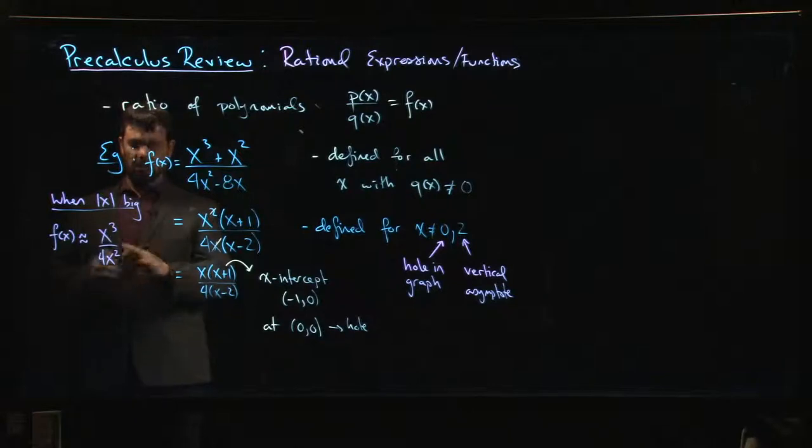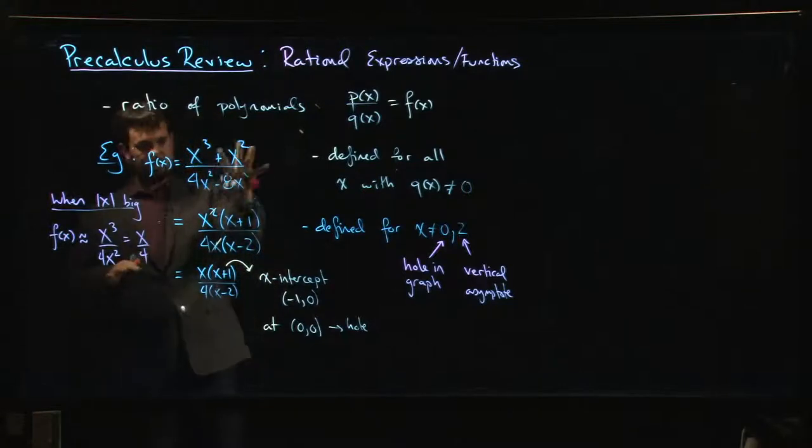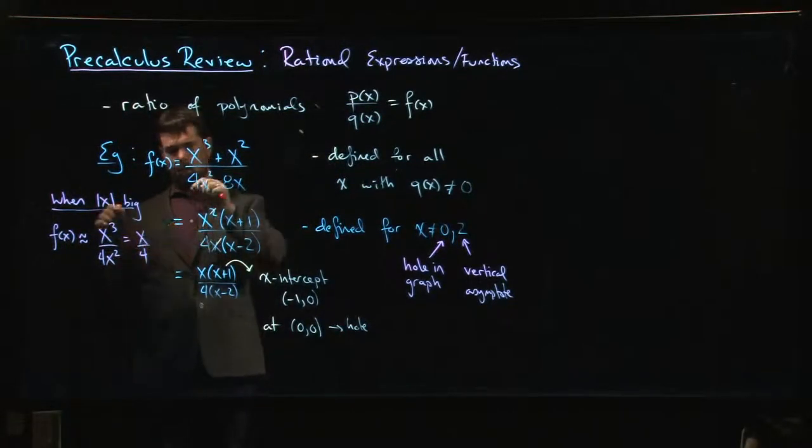We're thinking big absolute value of x here, so we're away from zero, so we don't worry about the fact that this is undefined at zero. If we simplify, this is just x over 4. That tells us that the graph of this thing, once x gets big enough, is going to look more or less like simply the line y equals x over 4.